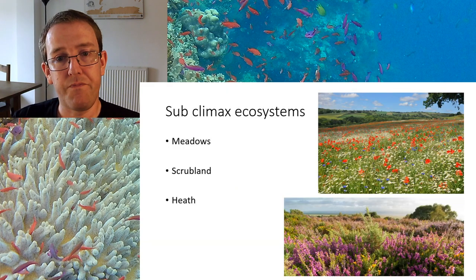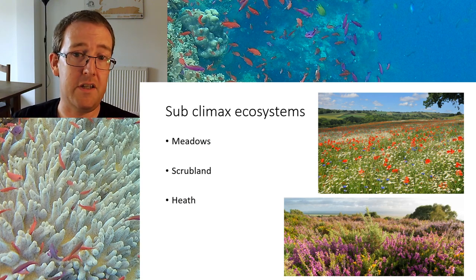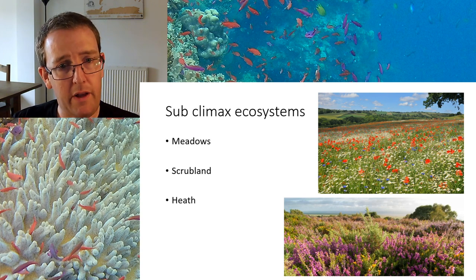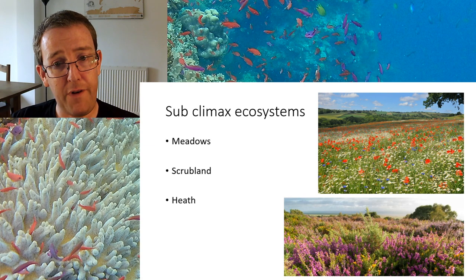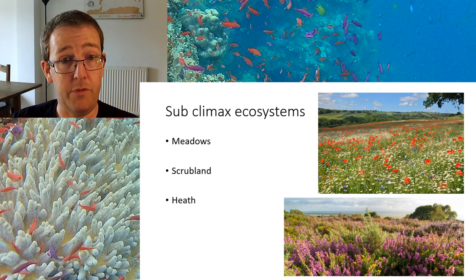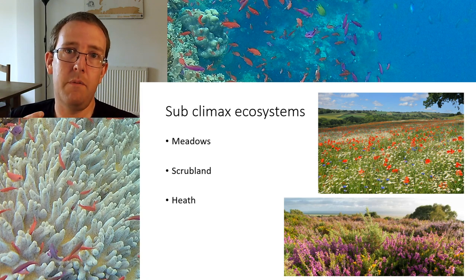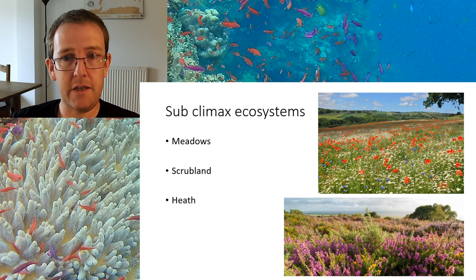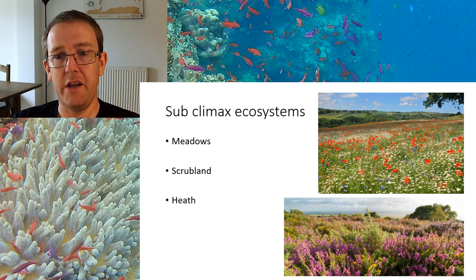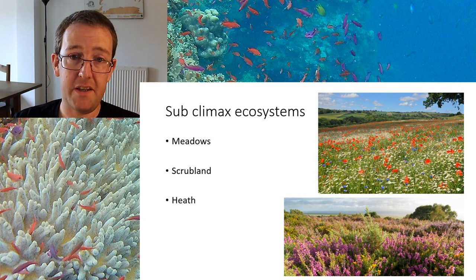Sub-climax ecosystems are massively important. To give you some UK examples: we've got meadowland, heathland, scrubland — some of these amazingly diverse, flower-rich, small-plant-rich environments are our sub-climax ecosystems. They make important contributions to the survival of bees, pollinators, lots of insects, and other animals. If we just let all that become forest without anything taking its place, we would lose a lot of biodiversity.